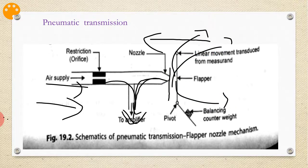Thus the movement of the flapper from one extreme position to another serves to control the amplifier, which produces an air pressure proportional to the measurement of adequate strength for transmission over the required distance. This is the basic schematic showing the pneumatic transmission flapper-nozzle mechanism.